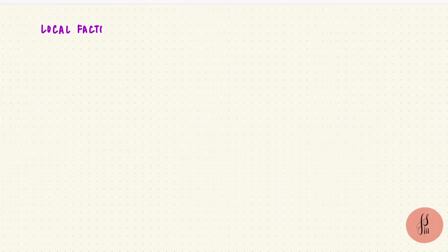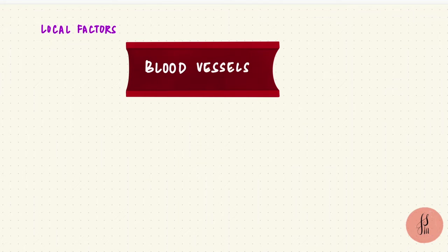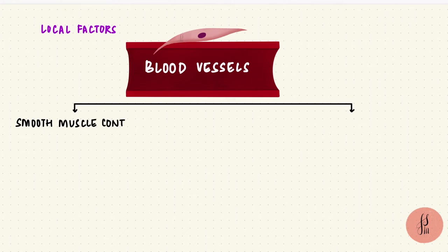There are local factors, particularly with blood vessels. Remember, their walls have smooth muscles in them. If they contract, the vessel constricts. If they relax, the vessel dilates.